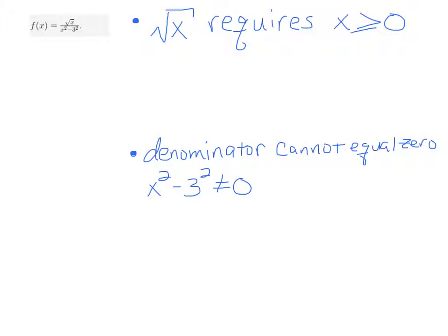It involves a square root, so that means the denominator cannot equal 0. Here's our denominator, and our numerator involves a square root, so the argument has to be greater than or equal to 0. Let's write these conditions down as bullet points.